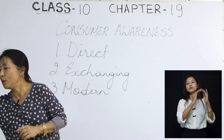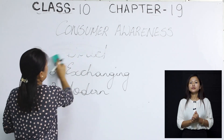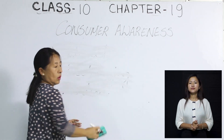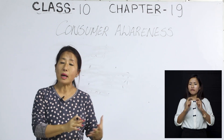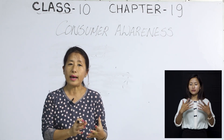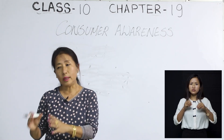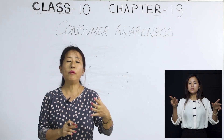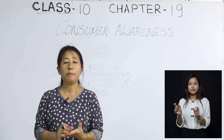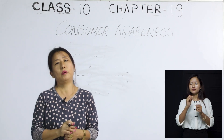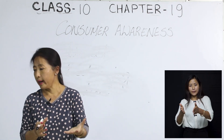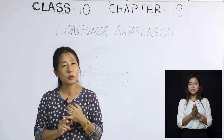The next topic we will discuss is exploitation. Consumer awareness is very important to make sure we are not being exploited. Now let's discuss the different forms of consumer exploitation — the different ways in which consumers are being exploited. The first one is underweighing and undermeasurement.